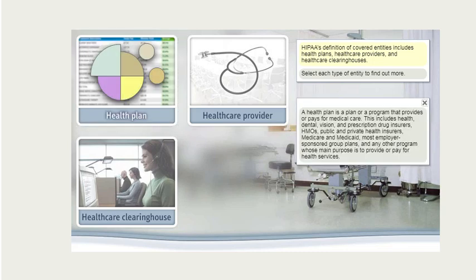A health plan is a plan or program that provides or pays for medical care. This includes health, dental, vision, and prescription drug insurers, HMOs, public and private health insurers, Medicare and Medicaid, most employer-sponsored group plans, and any other program whose main purpose is to provide or pay for health services.